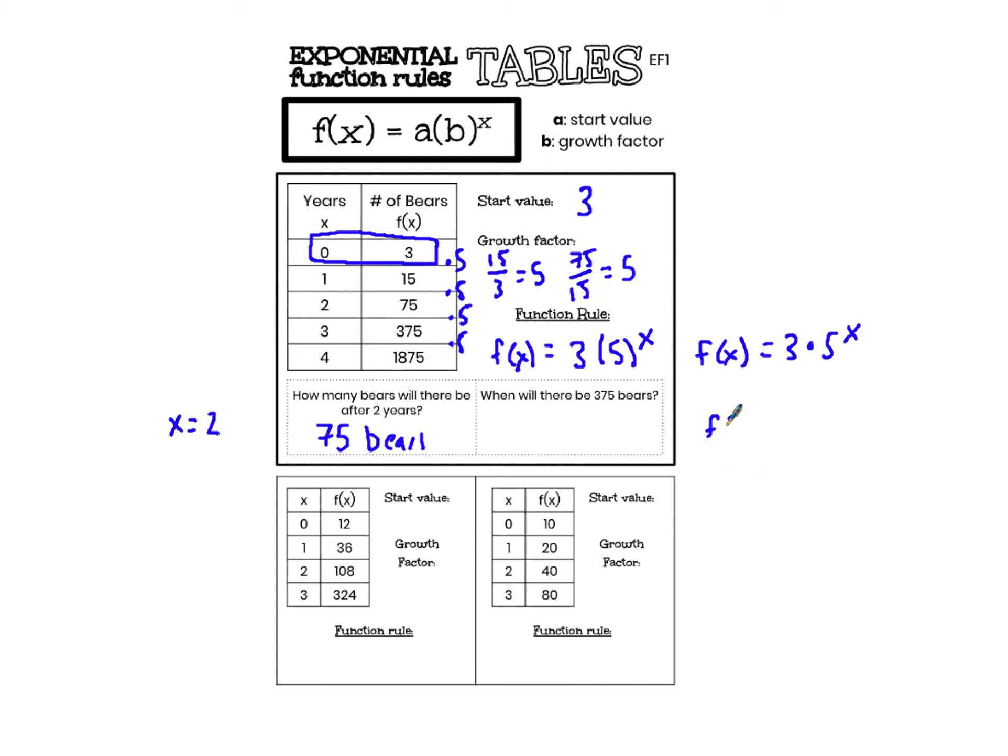I can also be told the value of f(x). So there are 375 bears tells me that the value of f(x) is 375. And I go to my table and see what is x. x is 3. That tells me that after three years there are 375 bears.